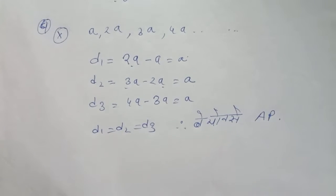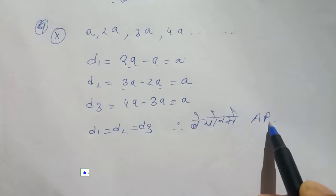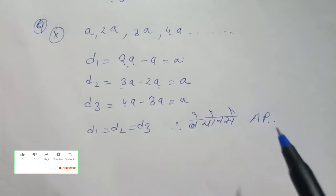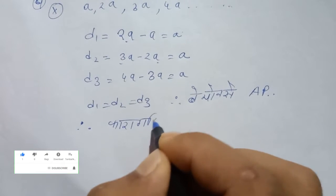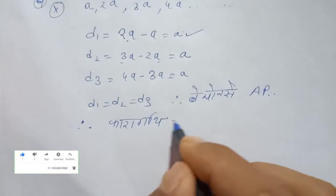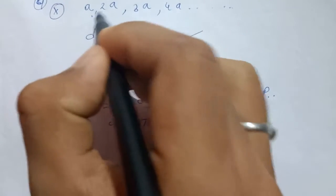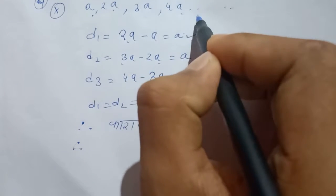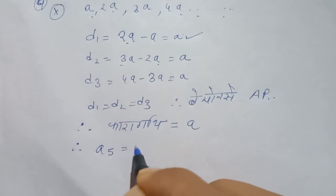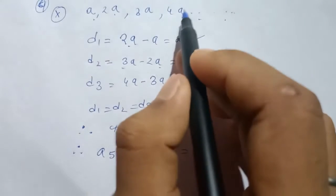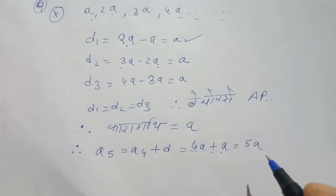Therefore, this sequence is an arithmetic progression (AP). The terms are A1, A2, A3, A4, A5, A6, A7. A5 equals A4 plus D.